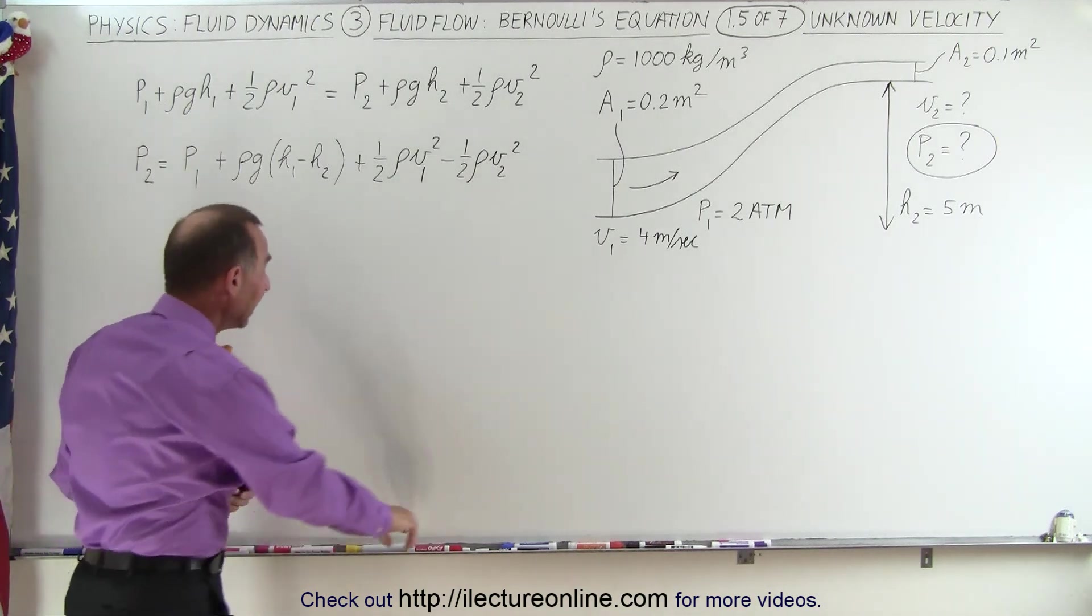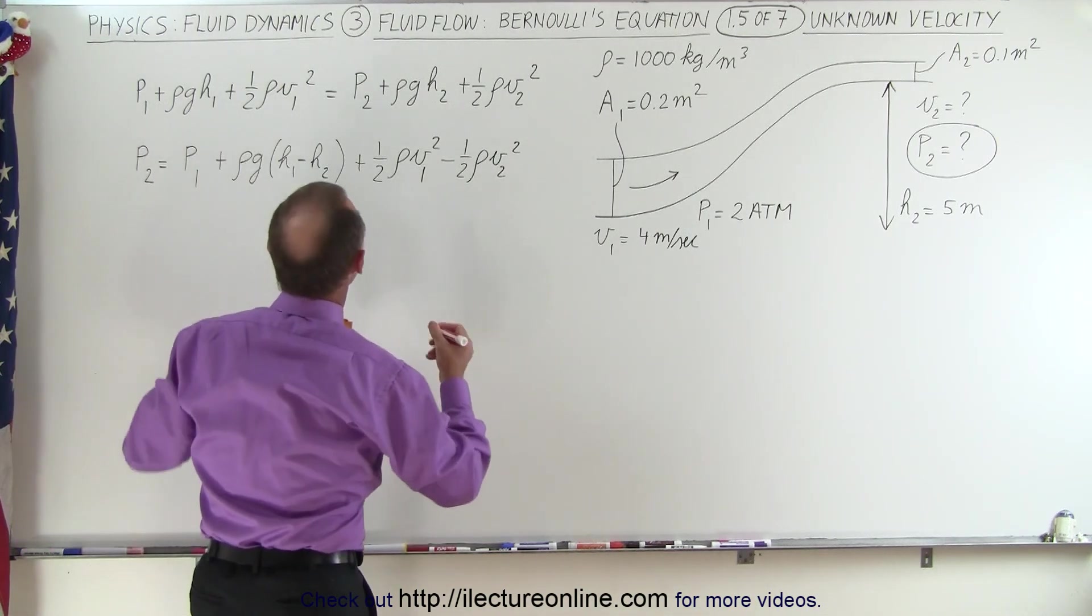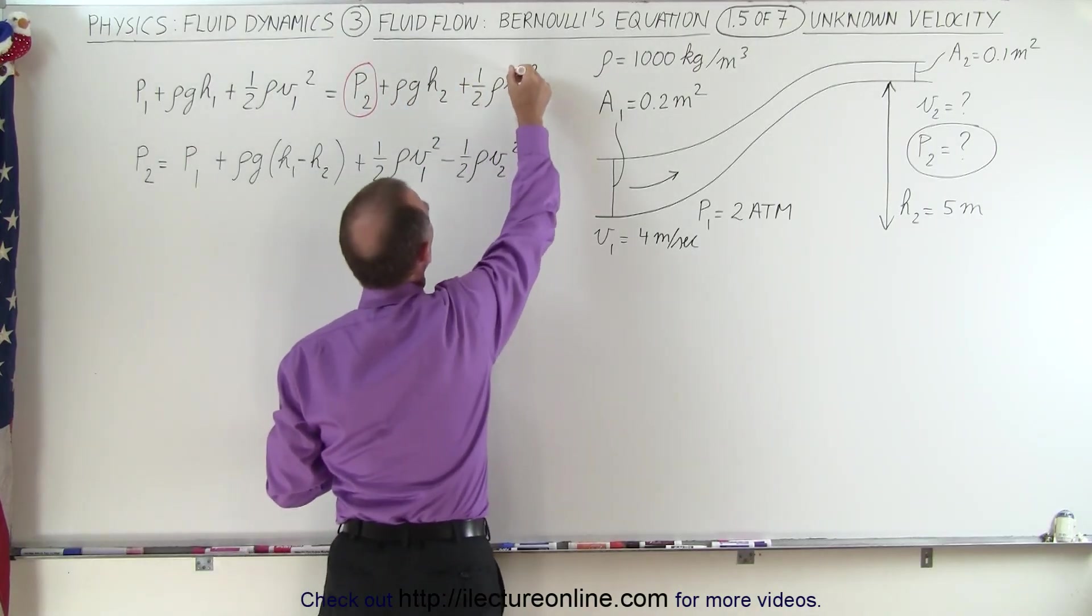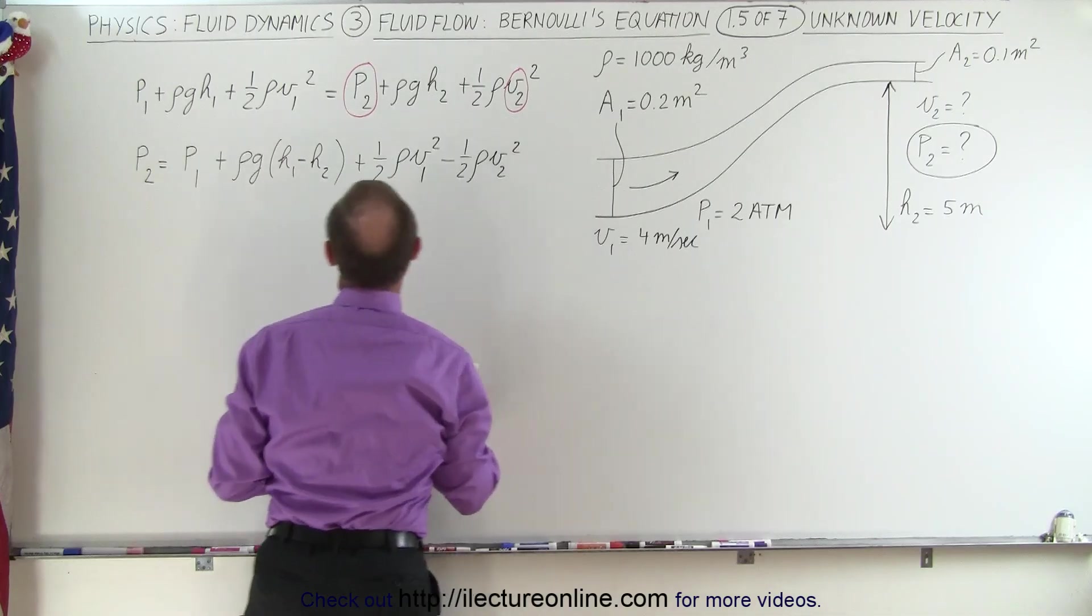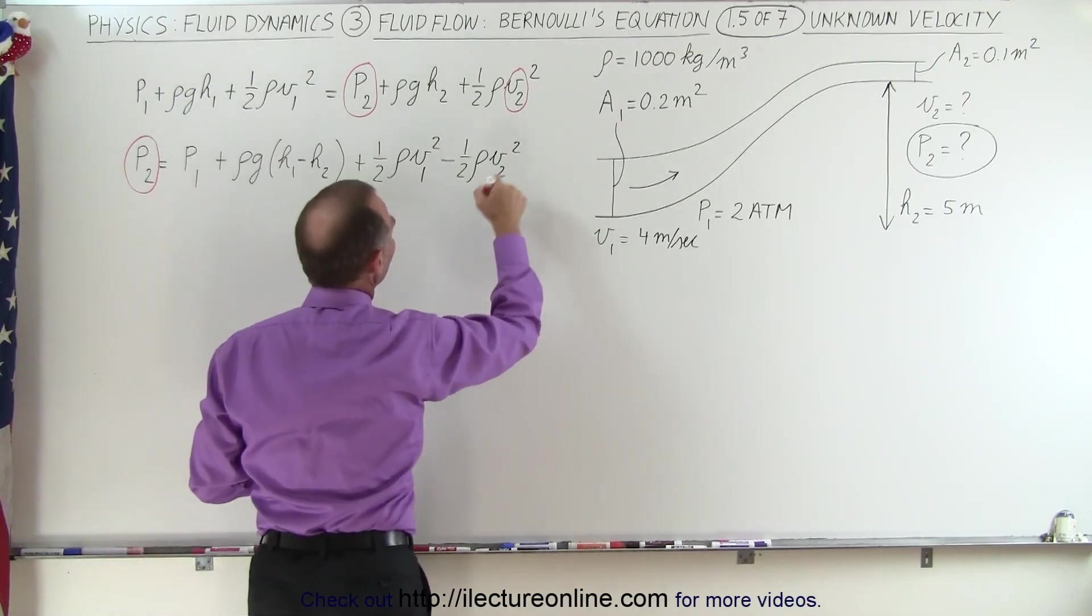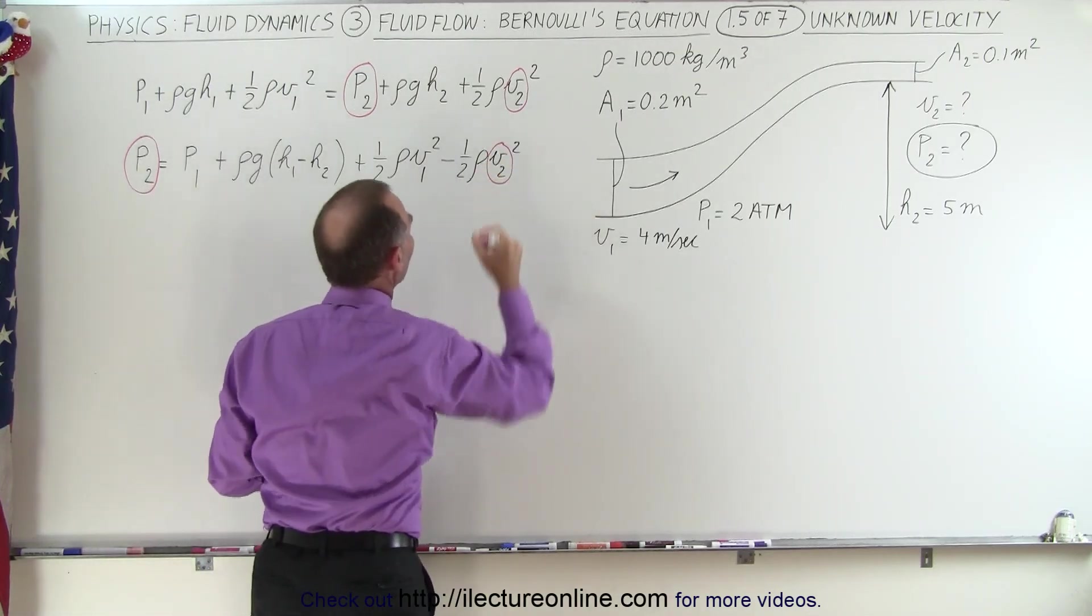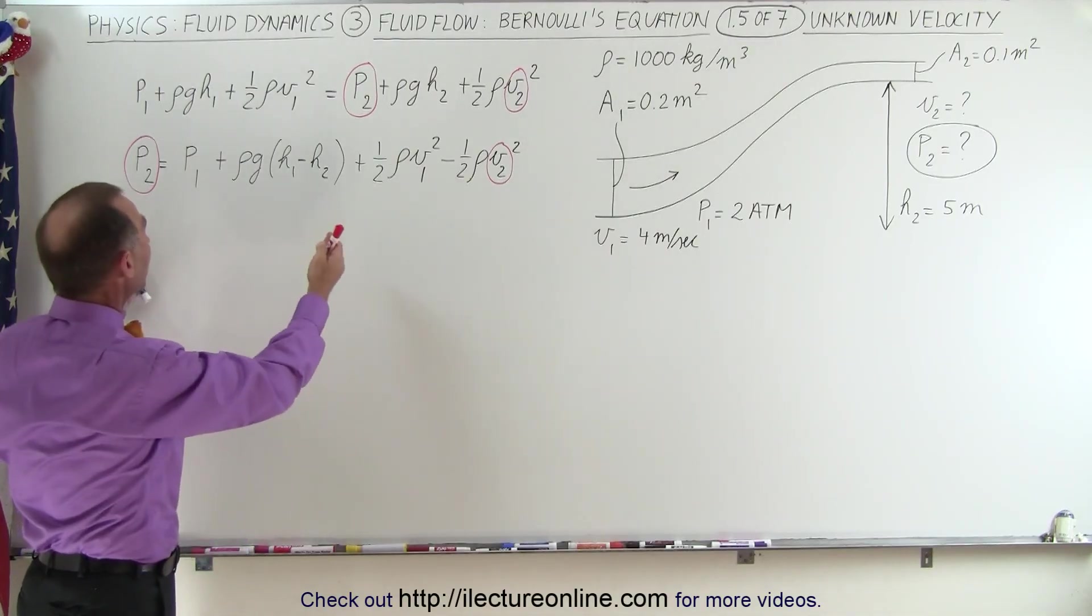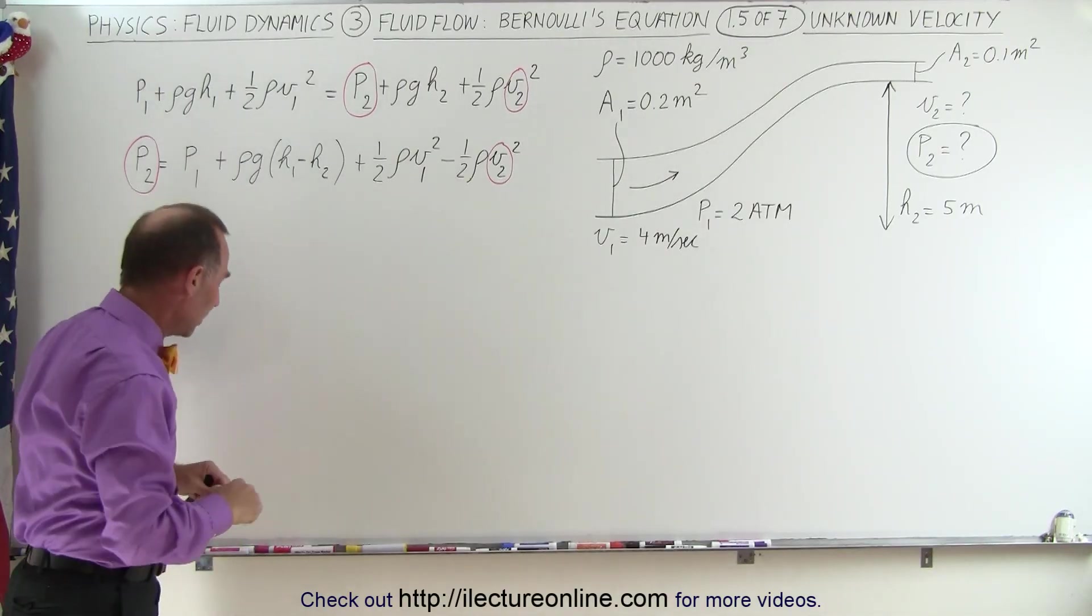Notice that in the initial equation we do not know what pressure is at point 2 and we do not know what the velocity is at point 2, which means that pressure at point 2 is of course still an unknown, but on the right side we have a second unknown which is the velocity at point 2. And then the question is how can we solve this problem if there's two unknowns in Bernoulli's equation.